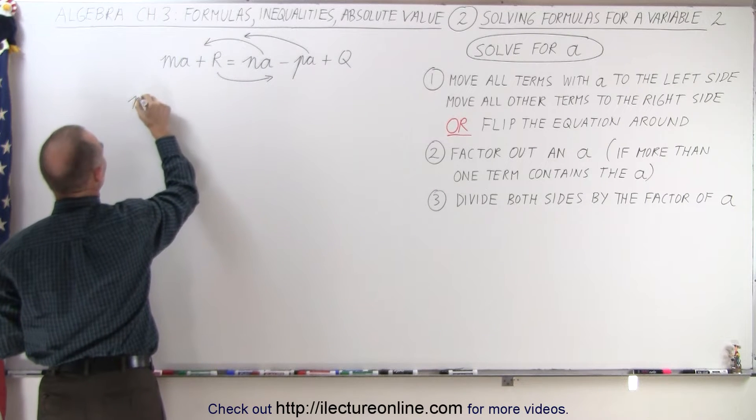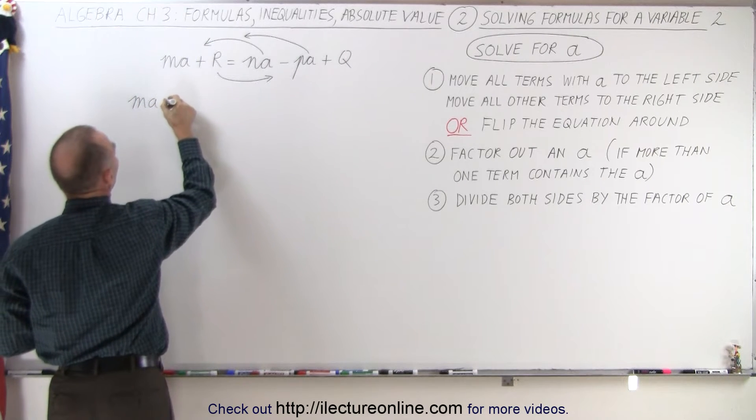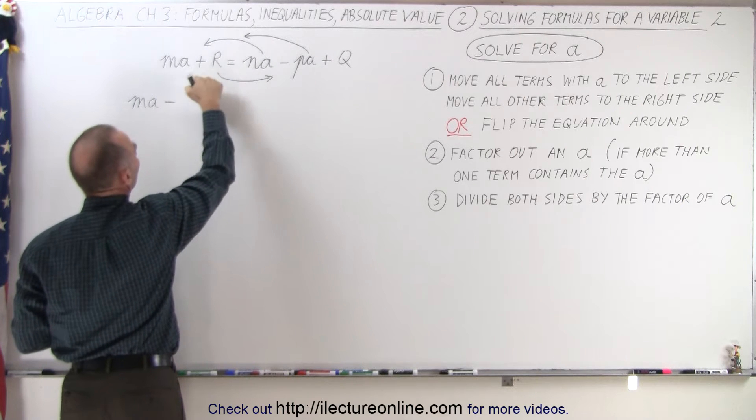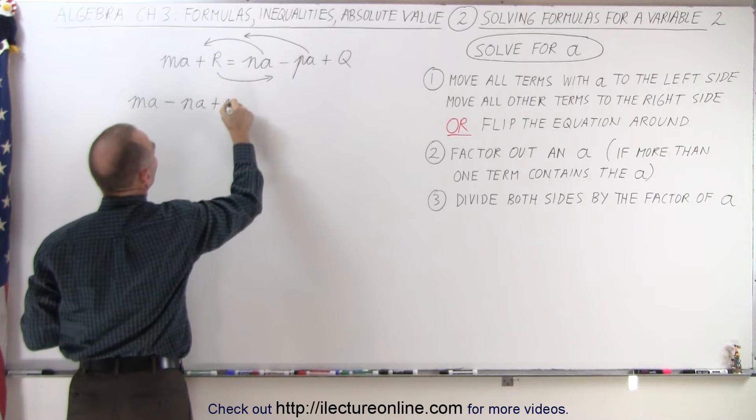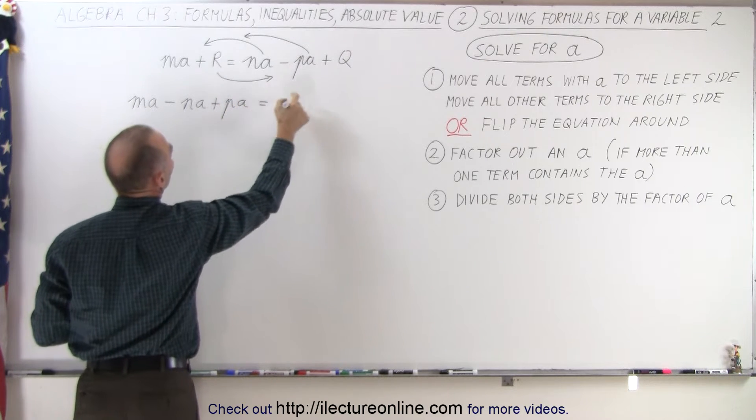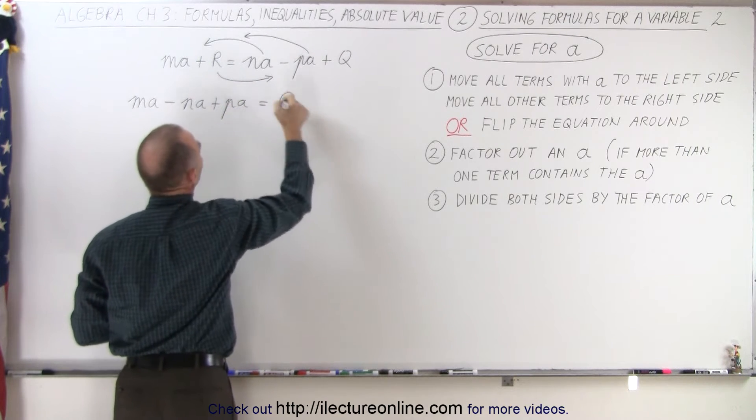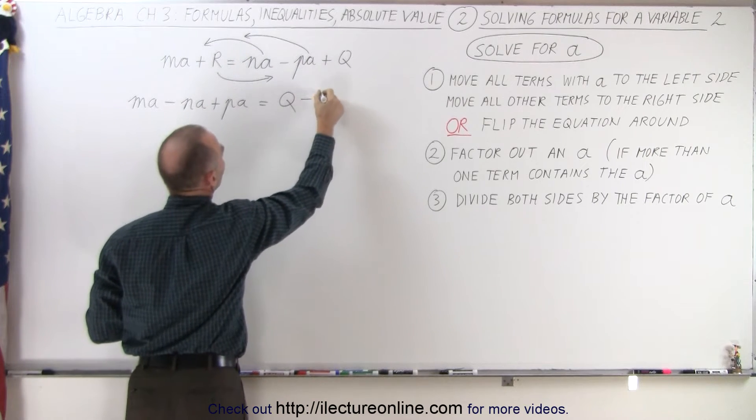Which means we end up with M times A minus, because when we move this across, it becomes a minus N times A. This becomes a plus, plus P times A equals, the Q is already there, and when we move the R across, we get minus R.